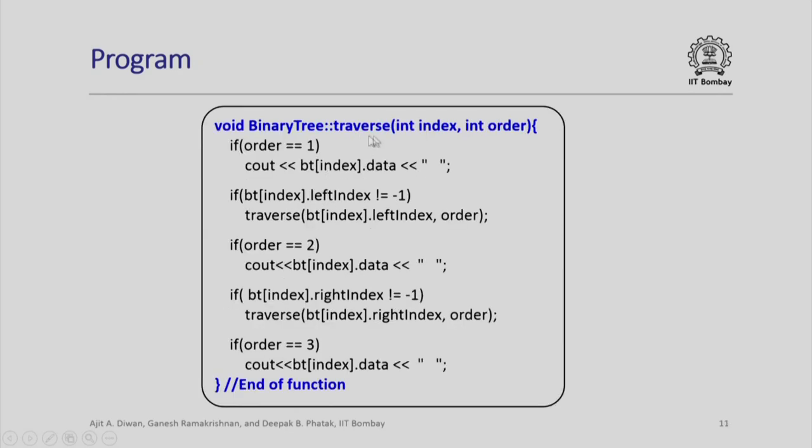Here is a traverse function. We just go by the order. We have arbitrarily chosen 1, 2, and 3 as representing 3 different traversal orders. If order is 1, we simply output the bt index dot data.